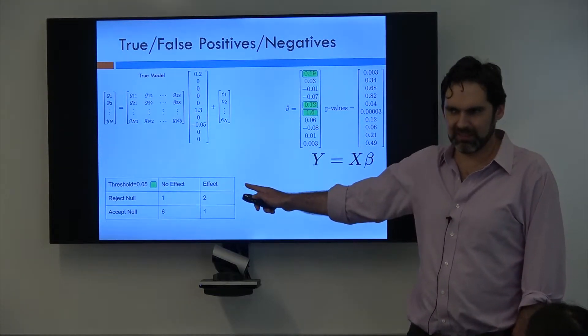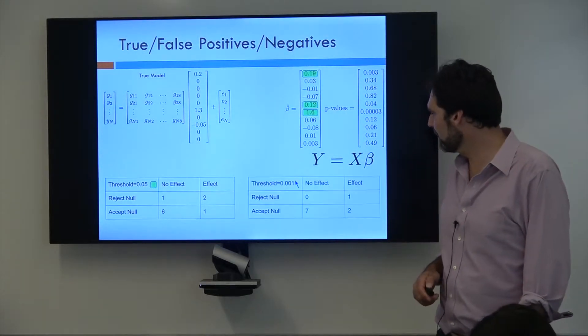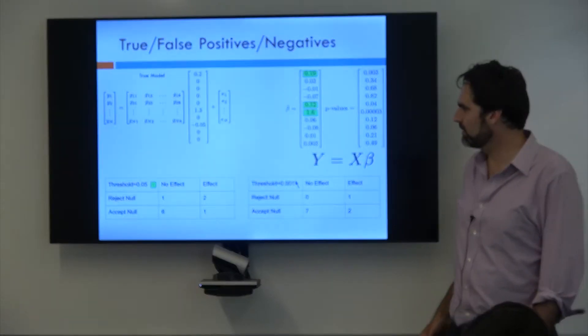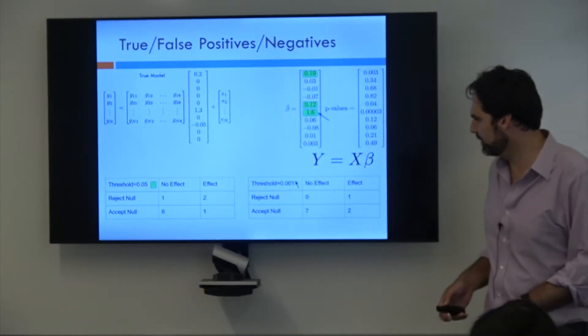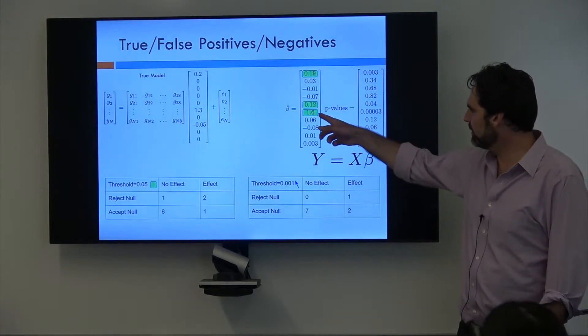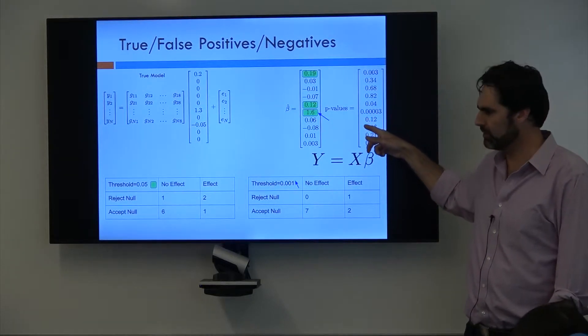However, we don't really like that false positive over there, because false positives aren't really something we want to deal with too often. So what we could do is we could lower our threshold from that 0.05 to 0.001. And if we were going to do that, this is the only one that now passes that significant threshold, because it's the only one with the p-value lower than that threshold.